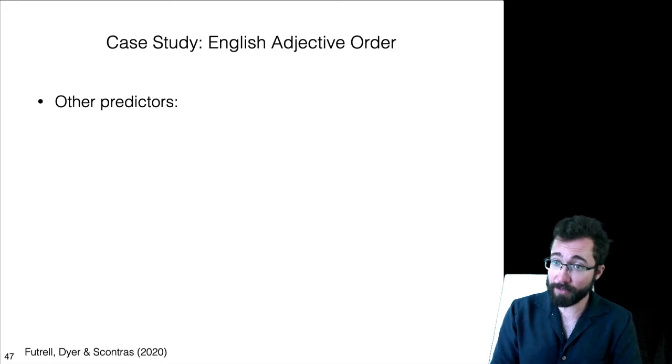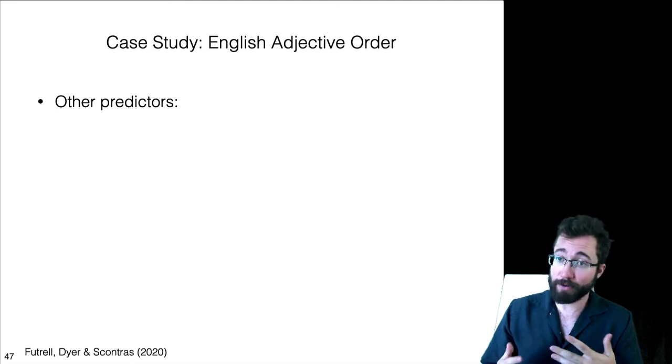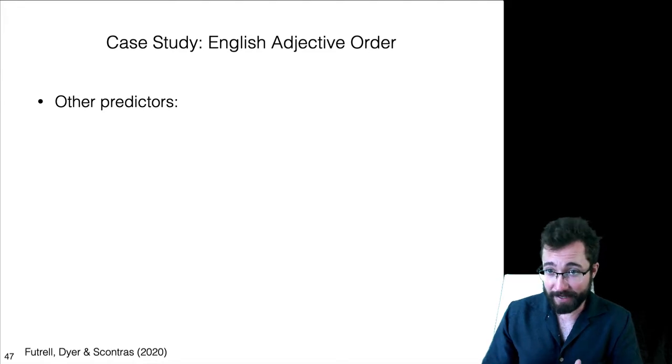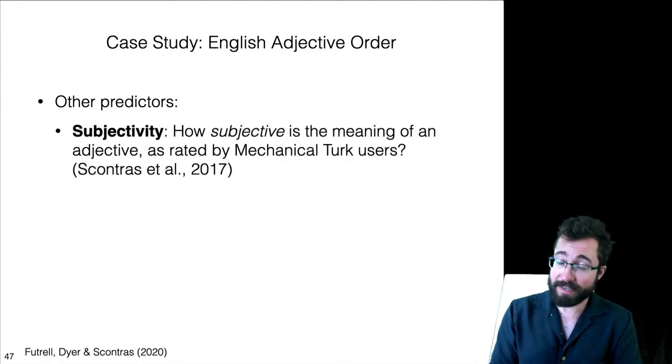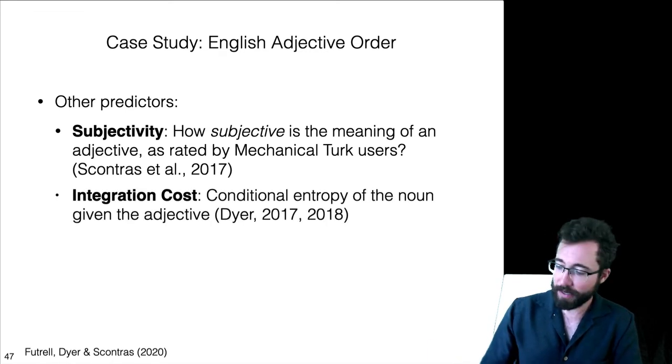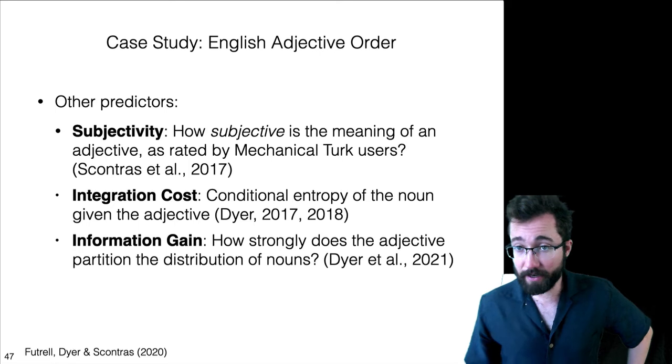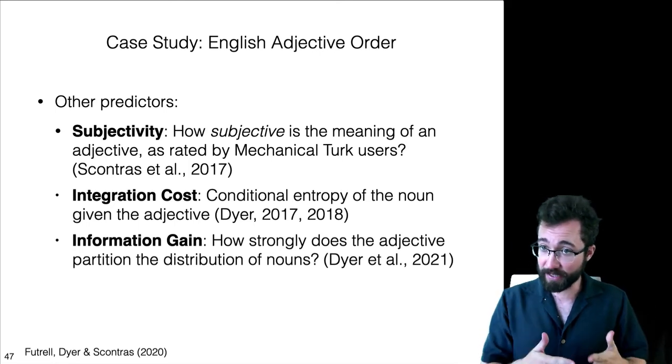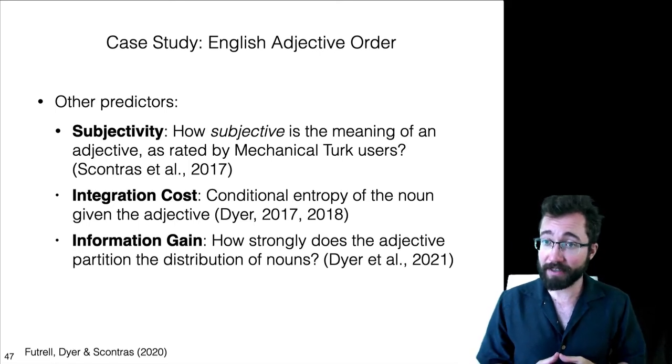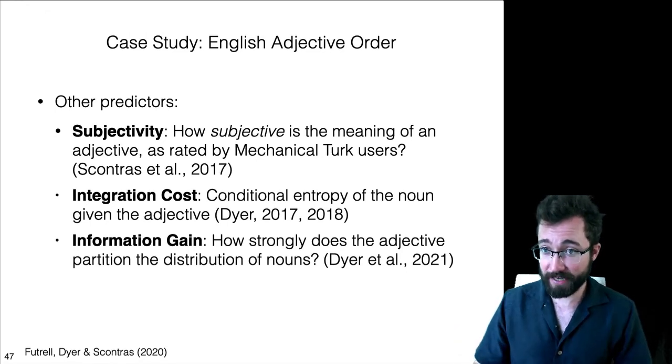We also want to explore the ability of other predictors of adjective order to explain the data here. So, there are other predictors which are either competing or complementary to information locality as explainers of adjective order. One of these is subjectivity. More subjective adjectives are known to go farther from the adjective. You can tell how subjective something is by asking someone on Mechanical Turk, how subjective is this adjective? Then these other two information theoretic predictors, integration cost and information gain. The integration cost is essentially conditional entropy of the noun given the adjective. Information gain is something like how well the adjective partitions the distribution of nouns.